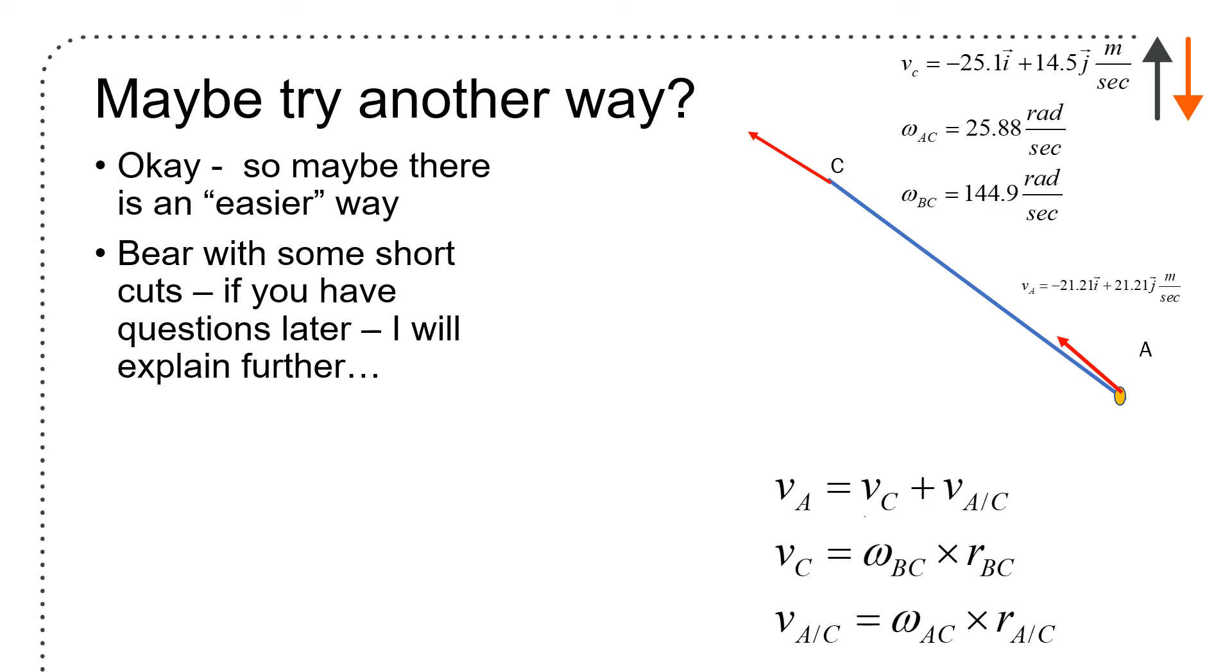Velocity of A with respect to C is omega AC crossed with RA with respect to C. So there's the distances. All of those are there. Omega BC crossed with RBC. Velocity of D equals velocity of C plus velocity of D relative to C. Velocity of D equals minus VDY because it is limited to move downward.